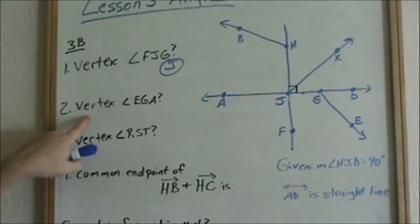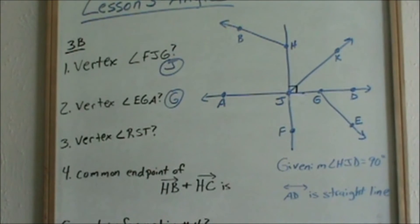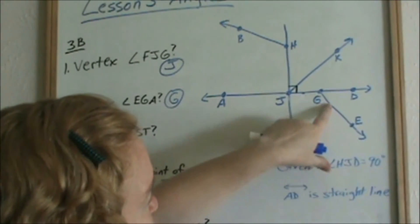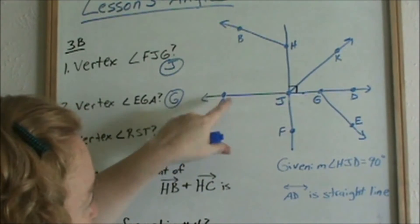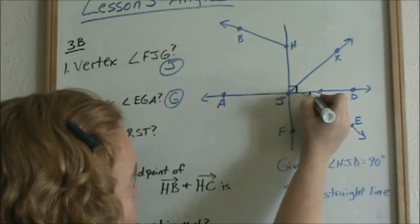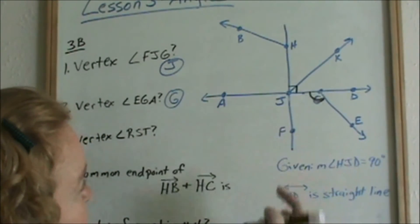Now they're asking number 2. What is the vertex of E, G, A? Again, you don't even have to have a picture to know, because the middle letter is always the vertex. So we know the vertex is G. The middle letter is always the vertex. But I'm going to show you in the picture. So follow with your finger, E, G, A. So E, G, A is this angle right there. E, G, A. That's that angle right there.